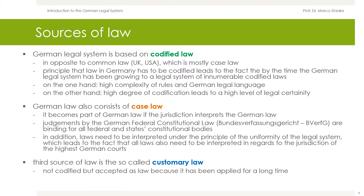In addition, laws need to be interpreted under the principle of the uniformity of the legal system. This leads to the necessity that all laws also need to be interpreted in regard to the jurisdiction of the highest German courts. The last source of law in Germany is the so-called customary law — law that is not codified but accepted as law because it has been applied for a long time. Customary law is also binding on judges.